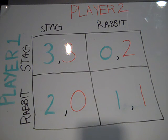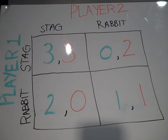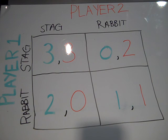Now, if player two knew that player one was going to hunt the rabbit, then player two would want to hunt the rabbit because instead of going home with zero, he would be going home with one. And that is the Nash equilibrium.